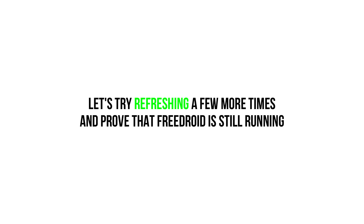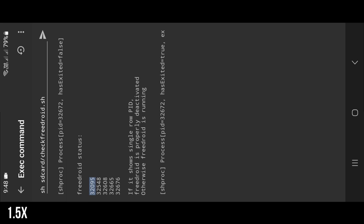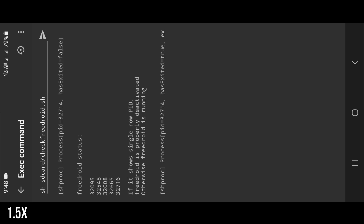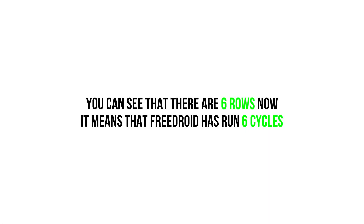It seems that there are four rows of process ID, meaning FreeDroid has already run four cycles. Let's try refreshing a few more times and prove that FreeDroid is still running. You can see that there are six rows now — FreeDroid has run six cycles. It's proven that FreeDroid works properly.